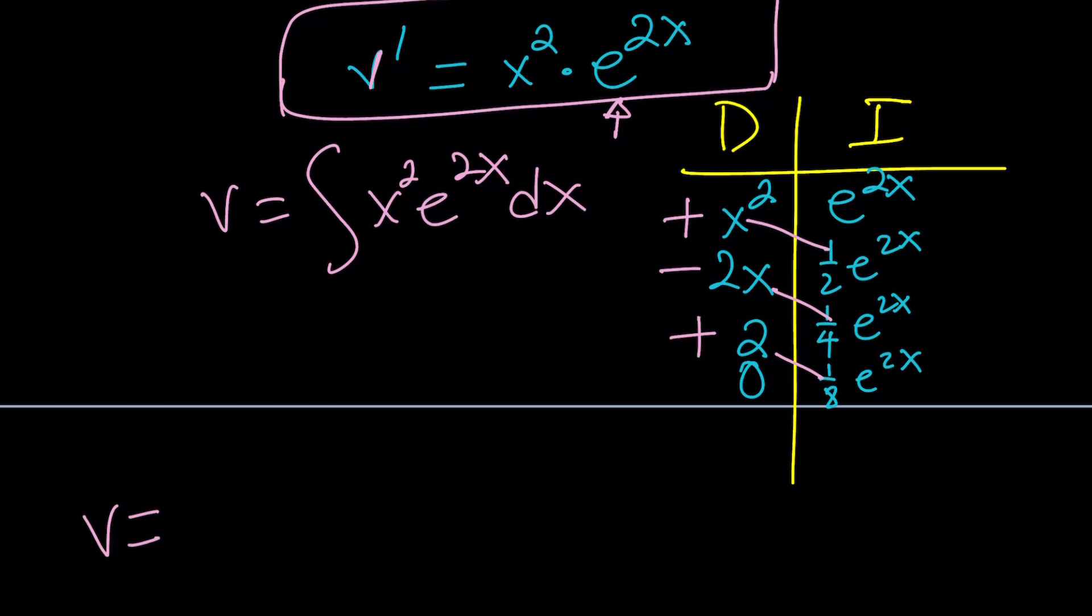So v is going to be - we're going to multiply these things. It's going to be (1/2)x²e²ˣ. And then we're going to multiply these two things. Minus 2 and 1/4 is going to give me (1/2)xe²ˣ. And then finally, 2 and 1/8 is going to give me (1/4)e²ˣ plus c.